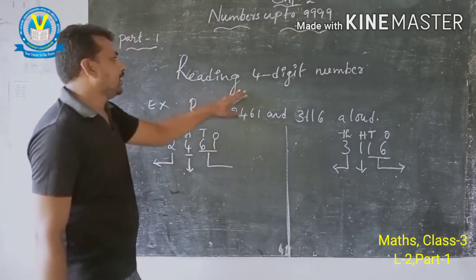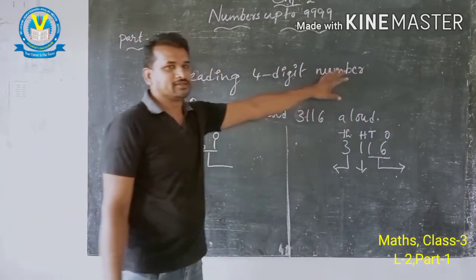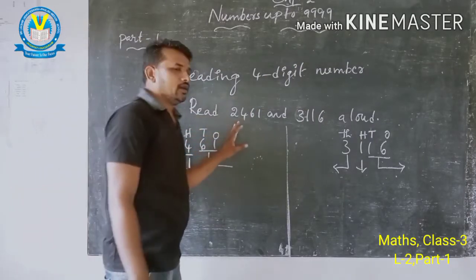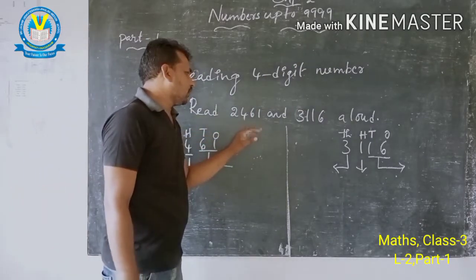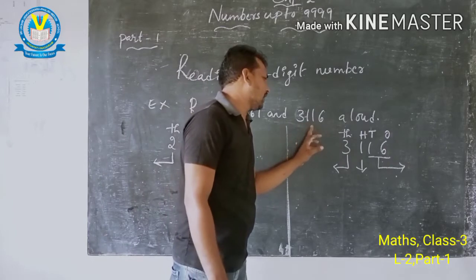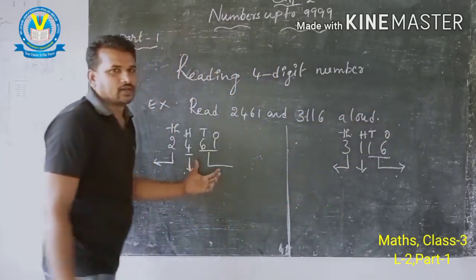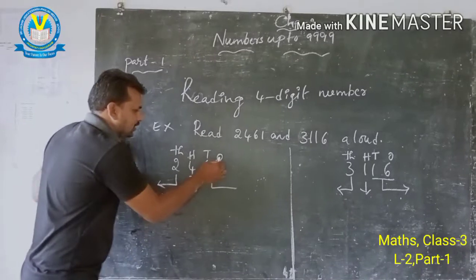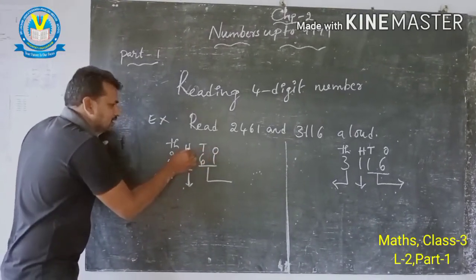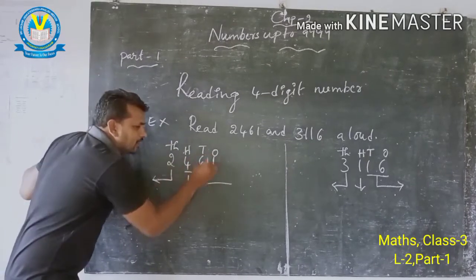Now, reading 4-digit numbers. Look at this example: read 2461 and 3116 loudly. This number has ones place, tens place, hundreds place, and thousands place.